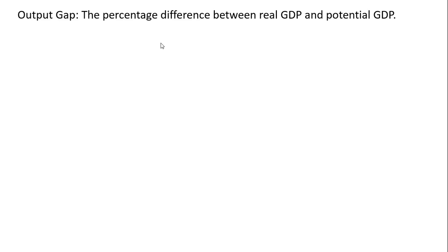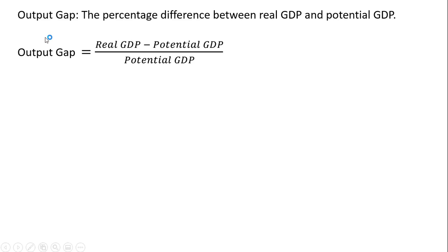The output gap is a percentage difference between real GDP and potential GDP. Here's the formula: real GDP minus potential GDP, all divided by potential GDP.